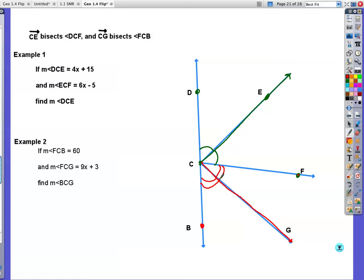Example one. If DCF is equal to 4X plus 15, so this whole angle, they're not telling you 22. They're not telling you 17 or 53. They're giving you algebraic expressions to fill in. And they're telling you ECF is equal to 6X minus 5. How am I going to figure out what angle DCE is? Well, I've got to figure out what X is. Before I can figure out anything else, I'm going to take into note that these angles are congruent. If they're congruent, then they're equal to each other. So 4X plus 15 is equal to 6X minus 5.